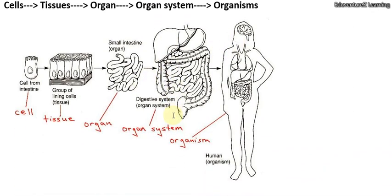Here in the picture it is very clear. This is a cell from the intestine. A group of cells makes tissues — this is the real tissue structure. Then lots of tissues together form an organ, that is the small intestine. The small intestine with other organs forms the digestive system. Here we can see the large intestine, small intestine, anus, liver, kidney — this is our digestive system.